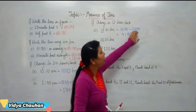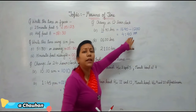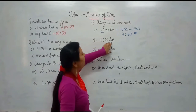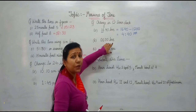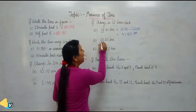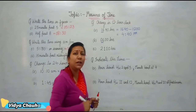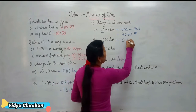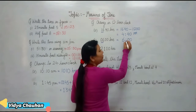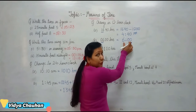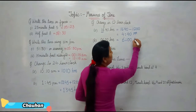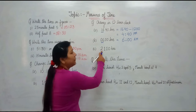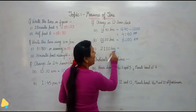If we had not subtracted by 1200, then we write AM. Coming to the second part: 600 hours. Here the hour hand is showing a time less than 12, so this is directly written as 6:00 — that means it is now in the 12-hour clock as AM. So it is 6 AM.